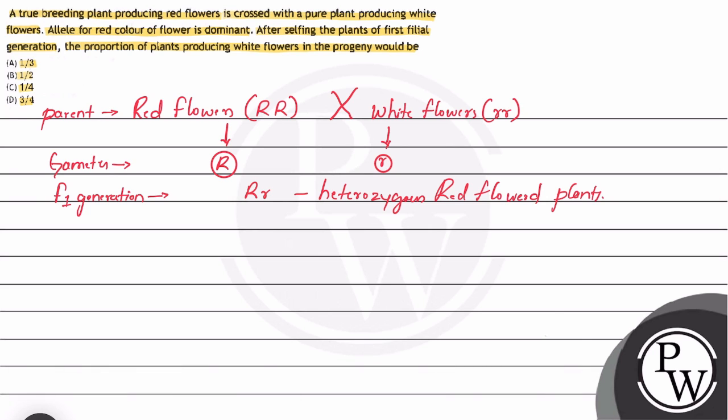In the second part of the question: After selfing the plants of first filial generation. Capital R small r is self-crossed with capital R small r. This is F1 generation self-crossing. So in F2 generation...